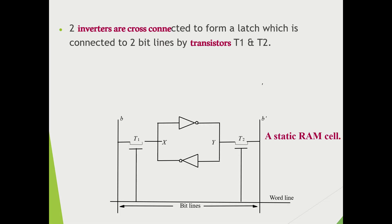Now we will study how a static RAM cell is implemented. This is a figure of a single cell which can store 1 bit of information — either 0 or 1. You can see two inverters (NOT gates) that are cross-connected — one in each direction — to form a latch. This latch is connected to two bit lines: bit line B and its complement B-bar.